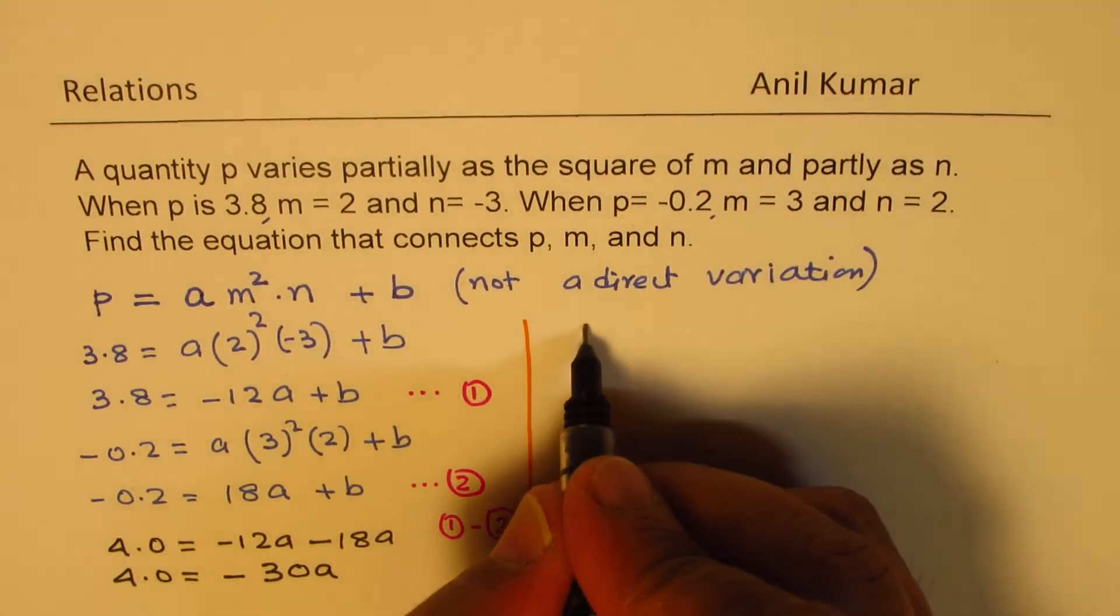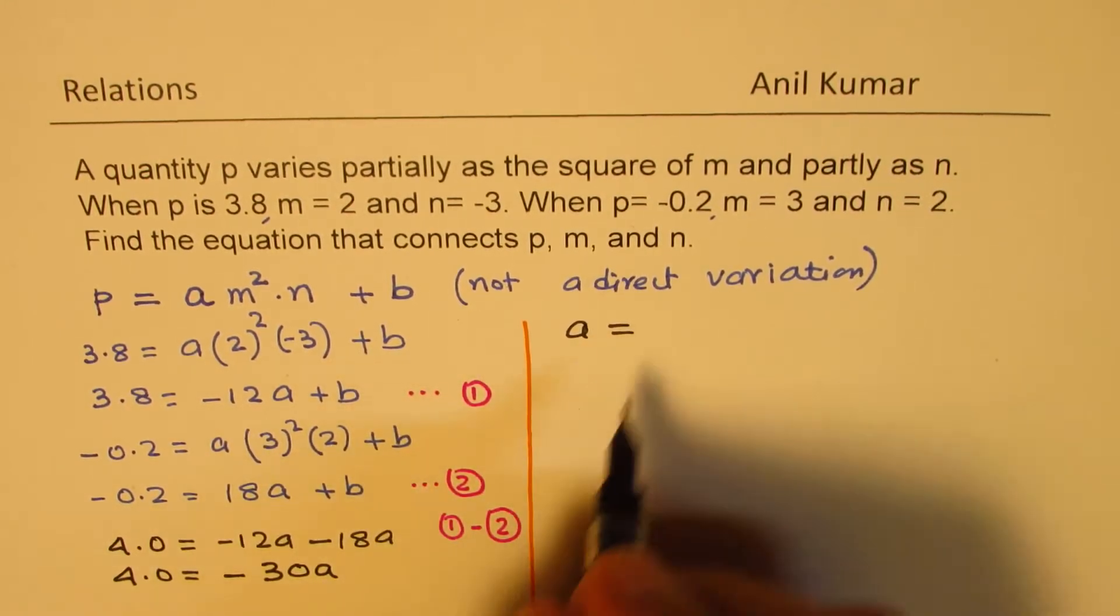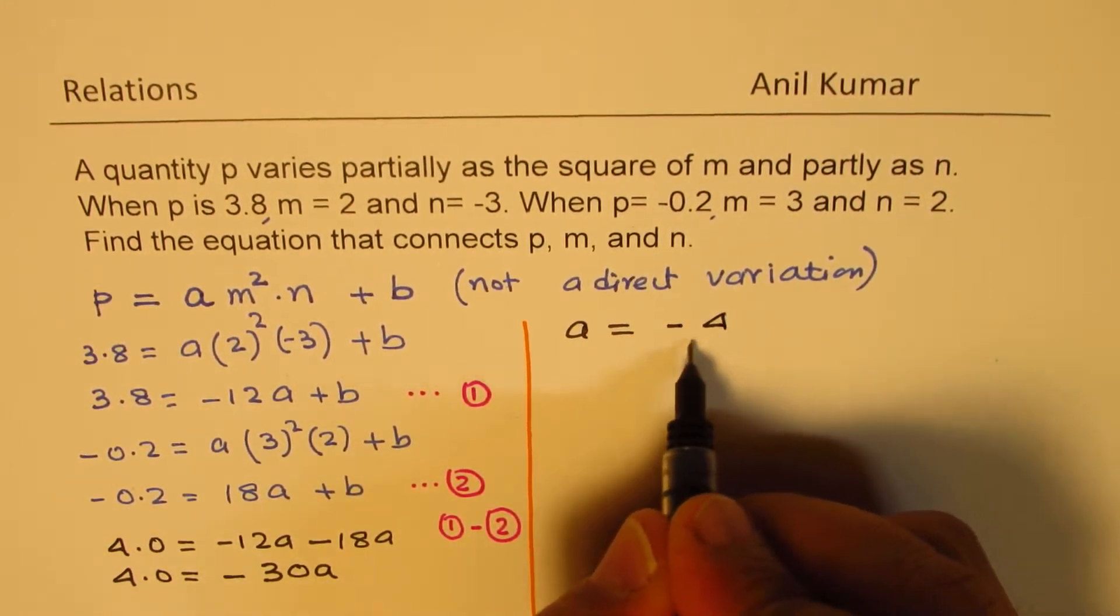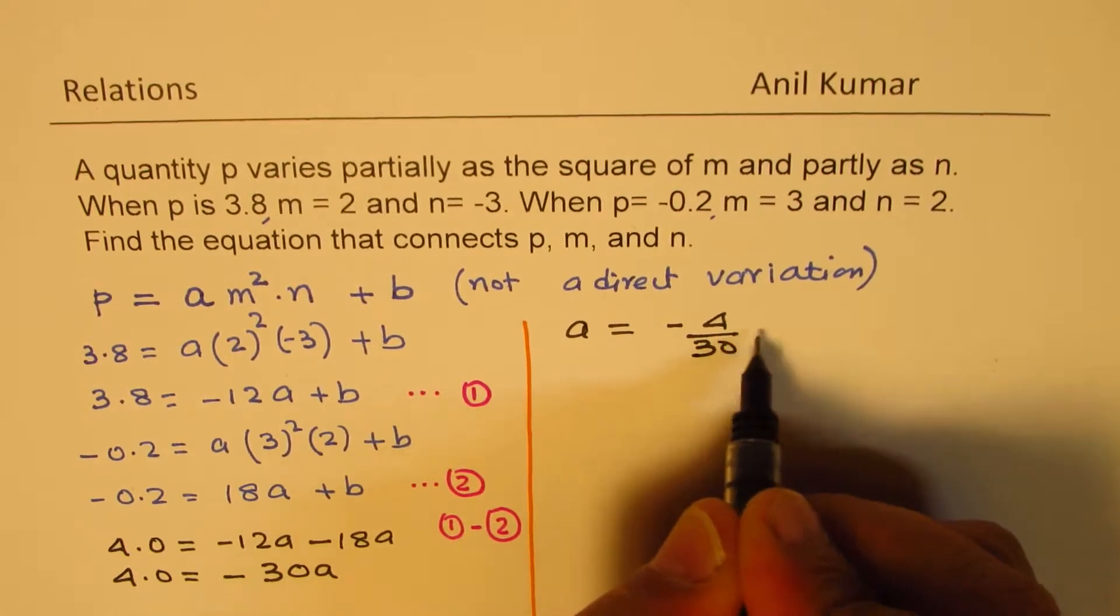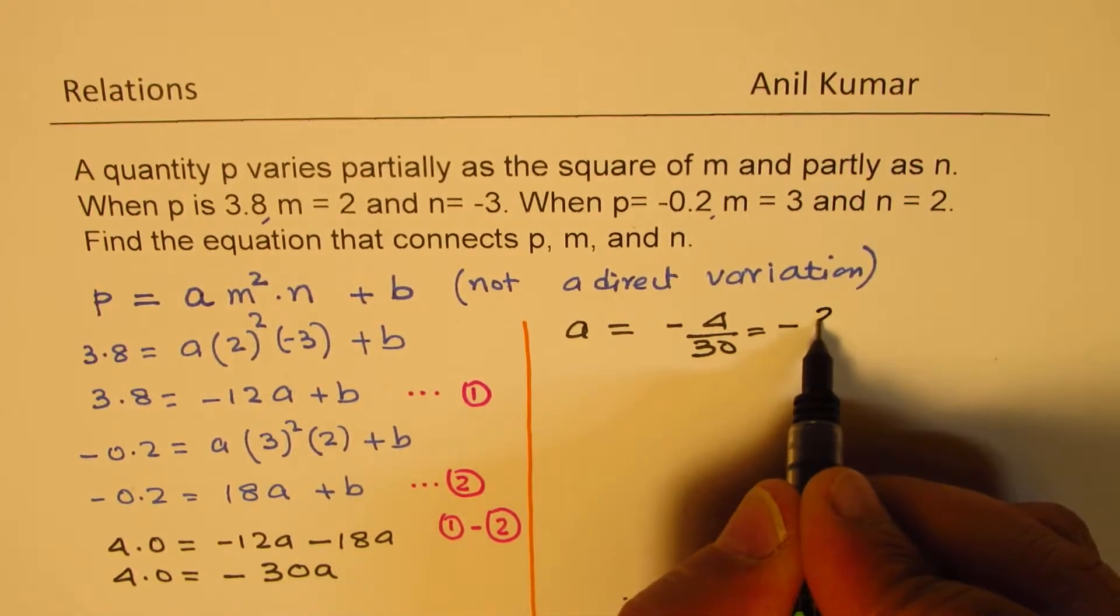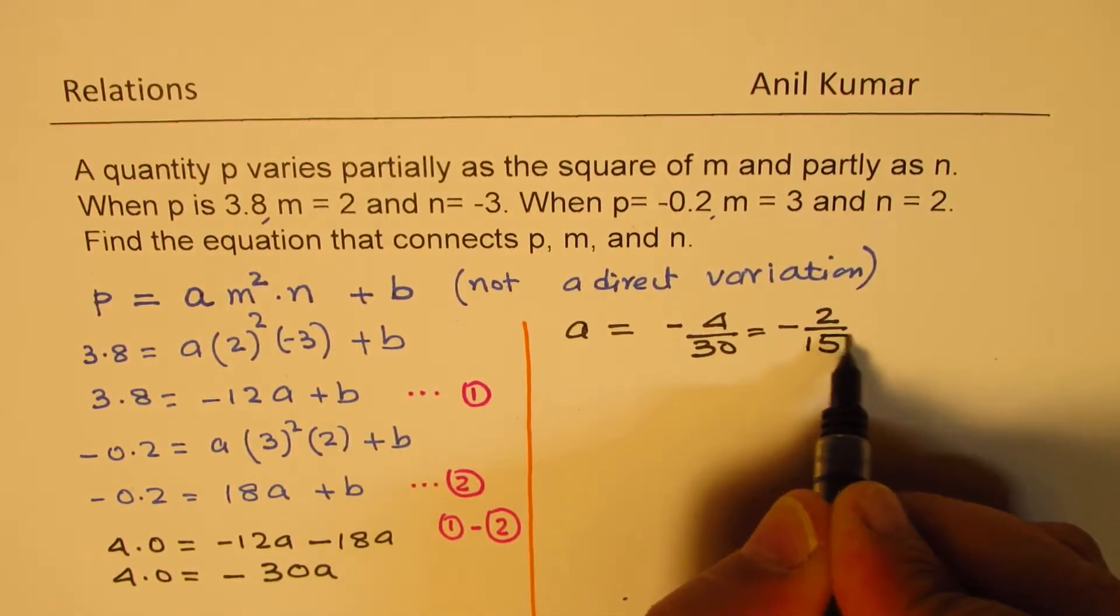So from here, we get A equals to minus 4 over 30, or you can write minus 2 over 15, so that is the value of A.